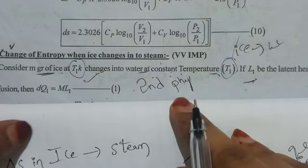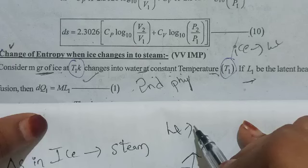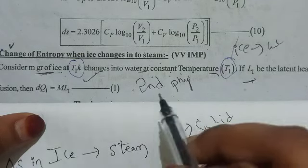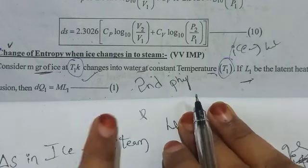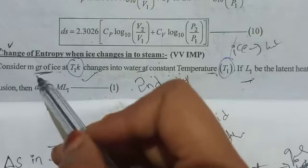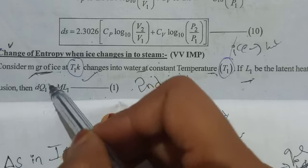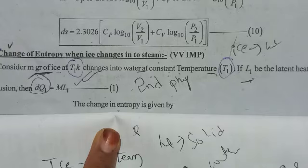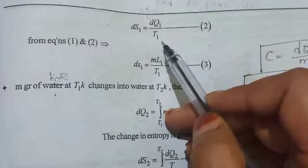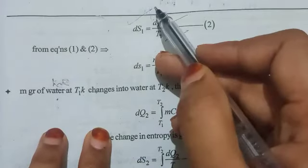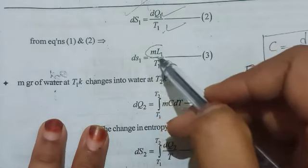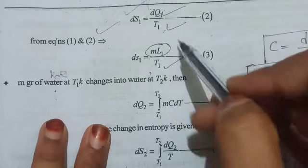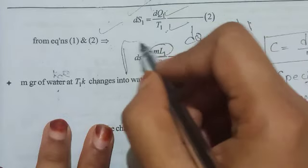If L1 is the latent heat of fusion, then dQ1 equals mL1. Latent heat of fusion is the heat required to convert from solid state to water state. The change in entropy is dS1 equals dQ1 by T1, which equals mL1 by T1. So this gives us the first change in entropy.